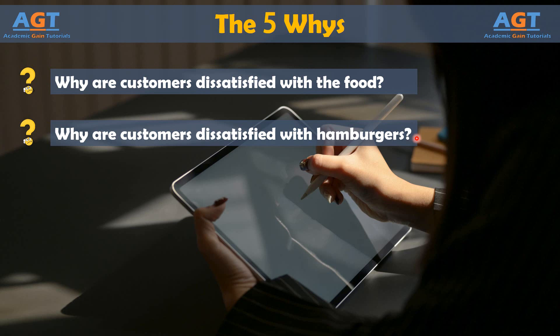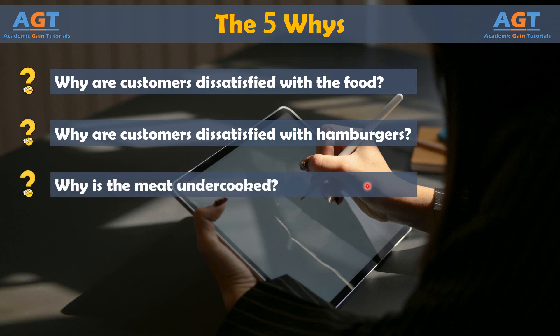Why is the meat undercooked? An investigation into the kitchen reveals that the grill is not properly calibrated and is providing inconsistent results. At this point, you have the y equal to f of x relationship, but the team could keep asking questions.